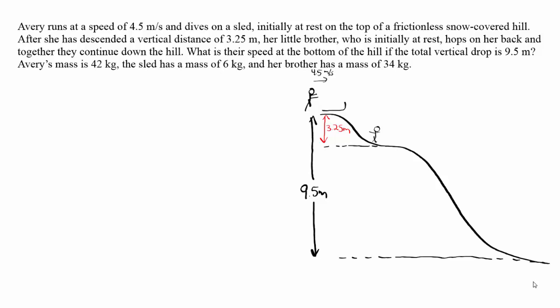In the first part of the problem, we have the girl running by herself and then she jumps on the sled. This part of the problem is a conservation of momentum problem. We have initially just the girl, Avery, running at 4.5 meters per second. She has momentum, and when she jumps on the sled, momentum is conserved, so we can find the velocity of Avery and the sled together at the top of the hill.